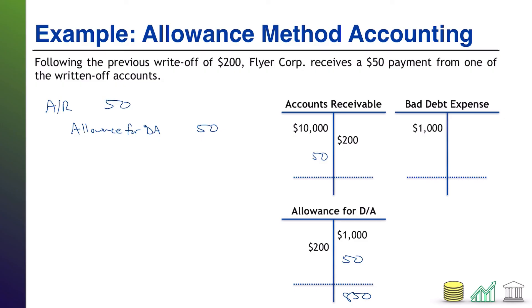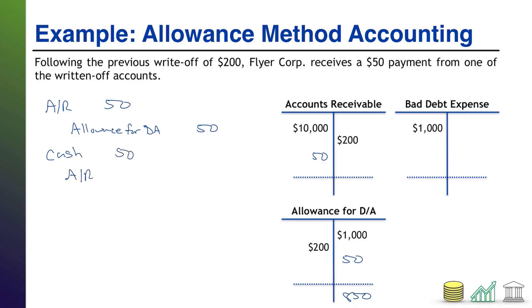That full $1,000 is going to end up being uncollectible. At this point, $150 is known to be uncollectible and $850 is still expected at a future time. That's why it makes sense to put the estimate back when you put the AR back. As part of the recovery process, we then get paid: debit cash, credit AR — and that makes the AR go away again, bringing us back down to $9,800 in receivables.